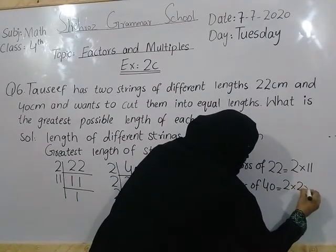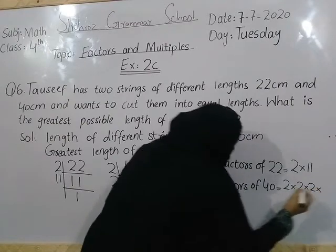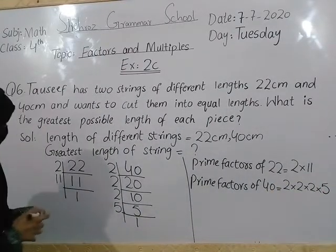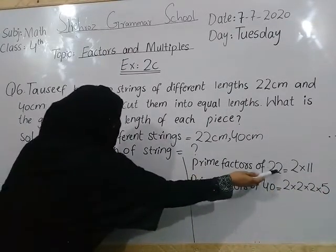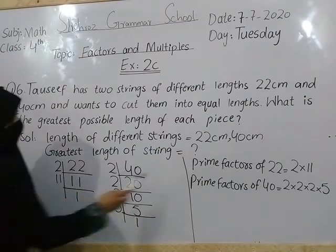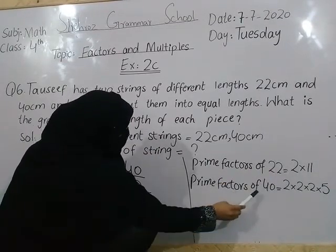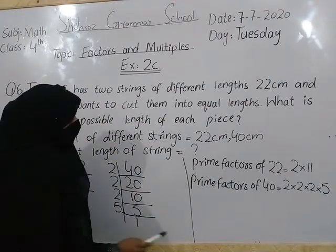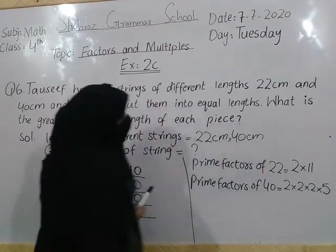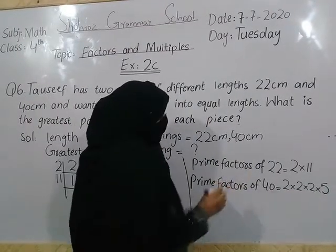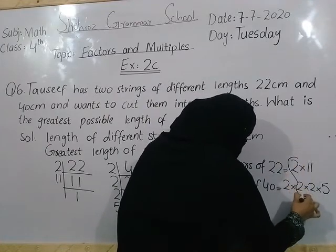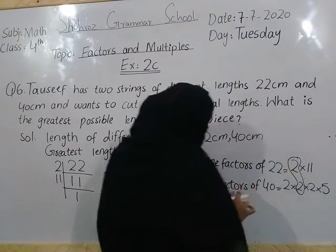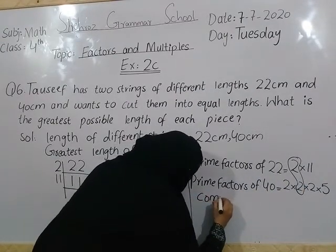So, students, 2 multiplied by 11 — we write that here: prime factors of 22 are 2 × 11. Prime factors of 40 are 2 × 2 × 2 × 5. Now, students, which factor is common? It is 2. Circle the 2 — the common factor is 2.